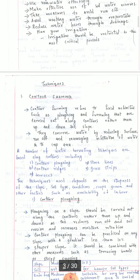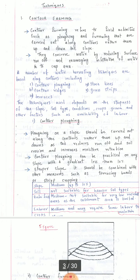Next are the techniques involved in water harvesting. In farming and agricultural activities, large quantities of water are wasted. If we take care of these agricultural activities, we can easily conserve large quantities of water. There are many different techniques which can be followed in irrigational activities. The first one is contour farming. Contour farming refers to field activities such as plowing and furrowing that are carried out along contours rather than up and down the slope.